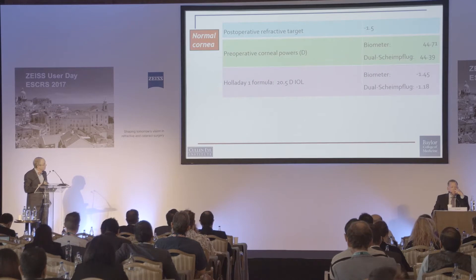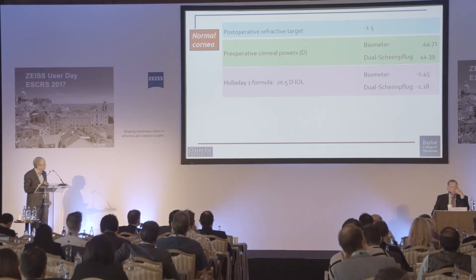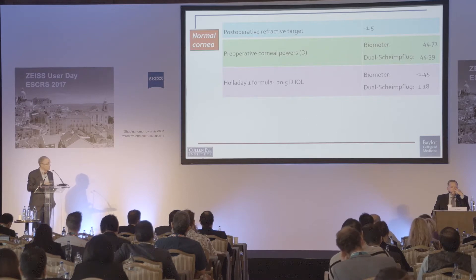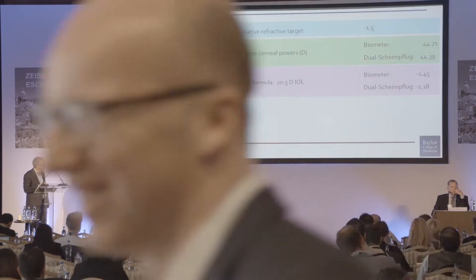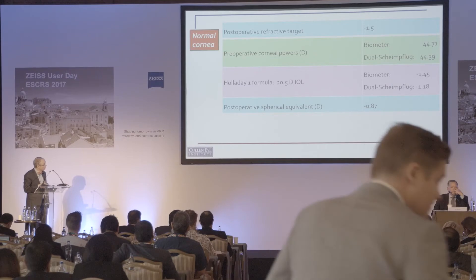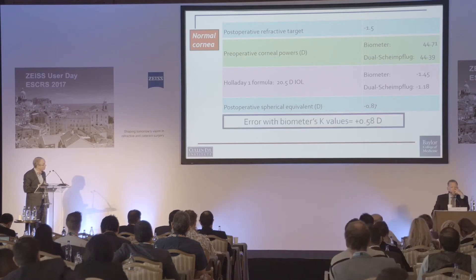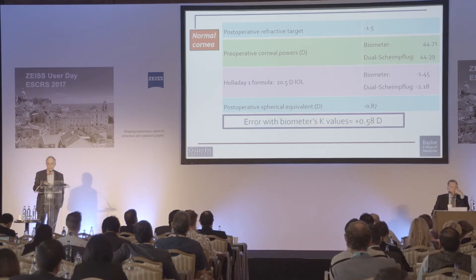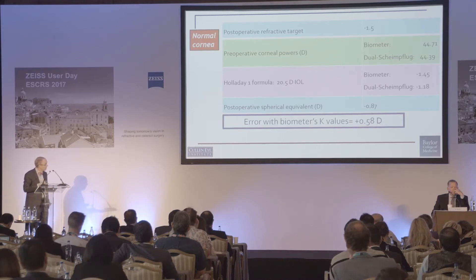With the Holladay One formula, this biometer was a different device, not the Zeiss device — a dual Scheimpflug device. The spherical equivalent ended up at minus 0.87, with the biometer's error for the K reading, at least from the refractive error, of 0.58 diopters.